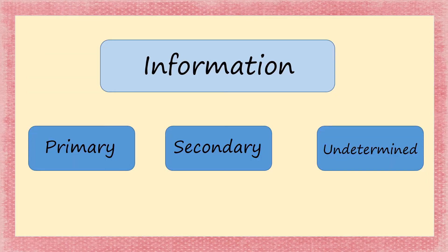Now that we've found a source and decided if it's original or derivative, the next part is to remember that sources provide information. There are three different types of information: primary information, secondary information, and undetermined information.